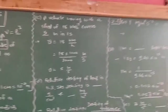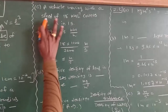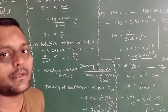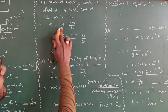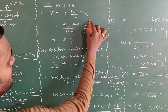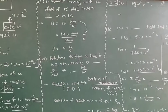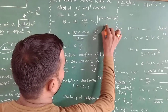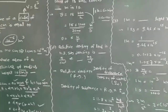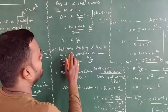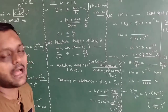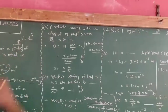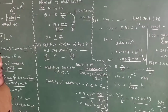Next part: A vehicle moving with a speed of 18 km per hour covers blank meters in one second. So data is given in kilometer per hour and we have to convert it to meter per second. This is a 9th standard numerical. Velocity is given 18 km per hour. Kilometer into meter: 1 km = 1000 m; hour into second: 1 hour = 60 minutes, 1 minute = 60 seconds, so 1 hour = 3600 seconds. By doing the simplification, we get the answer 5. So in one second, the distance traveled by the vehicle is 5 meter.